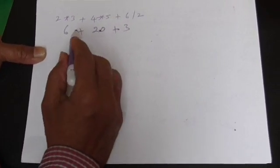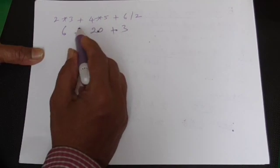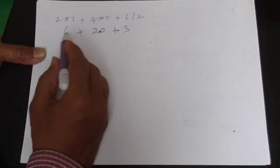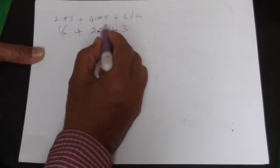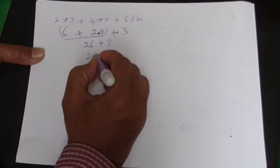The Rule of Associativity says, when there are operators of the same priority, in what order they should be executed, is stated by this. So it is 6 plus 20 is first evaluated. So 26 plus 3, it comes to 29.